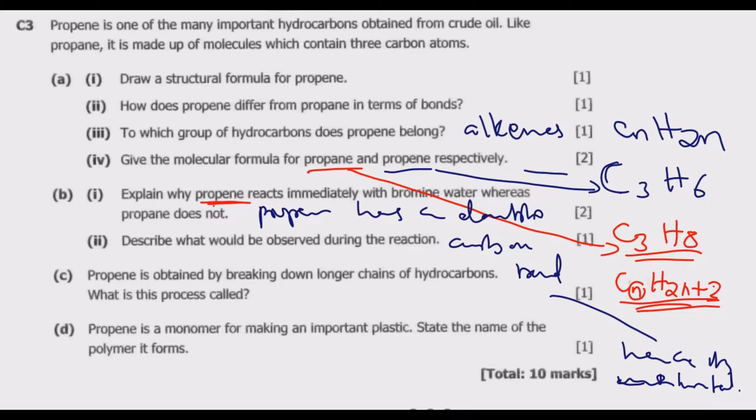Question (b)(ii): Describe what would be observed during the reaction. During the reaction, as this additional reaction is happening, decolorization of the bromine water will be observed. The bromine water would lose its reddish brown color due to the formation of dibromoalkane. The decolorization of bromine water will be observed.